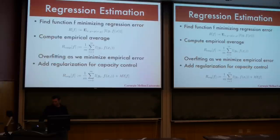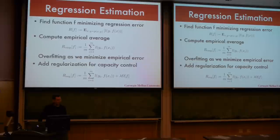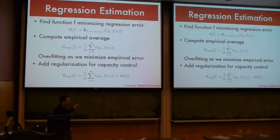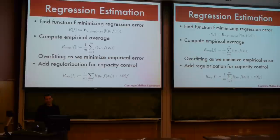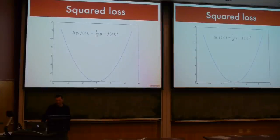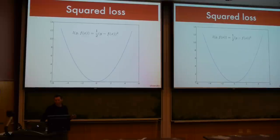Let's move on to regression. We want to find some function f that minimizes a regression error — the expected value of some loss under some distribution — but since we don't have that, we compute the empirical average. You add regularization for capacity control. One example of a loss is the squared loss: ½(y − f(x))², which we did in lecture one with linear regression.